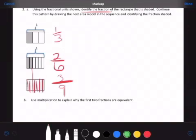And then we use a different color to shade. One, two, three, three ninths are shaded.